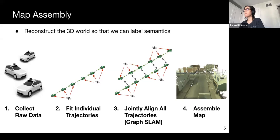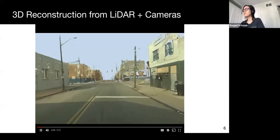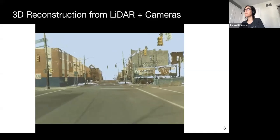This is then combined in a massive global optimization problem, which can be solved, for example, with graph SLAM techniques. The result is high-fidelity maps of our cities.